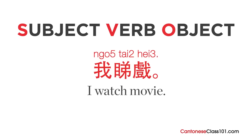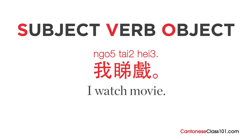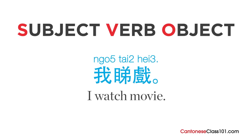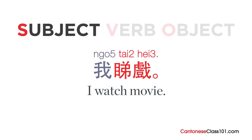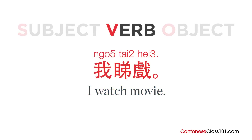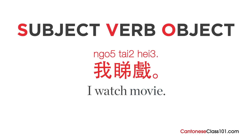To form basic sentences in Cantonese, keep that SVO word order in mind. For example: 我看戲 — I watch movie. Let's break down the sentence. We start with the subject 我, meaning 'I'. Then comes the verb 看, meaning 'watch'. And finally we have the object 戲, meaning 'movie'. Subject, verb, object. Easy!